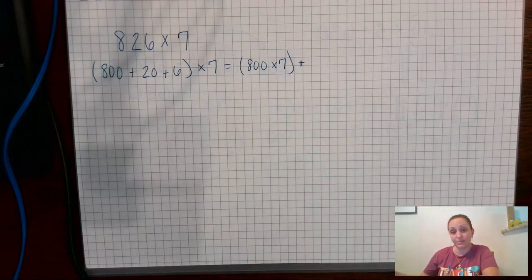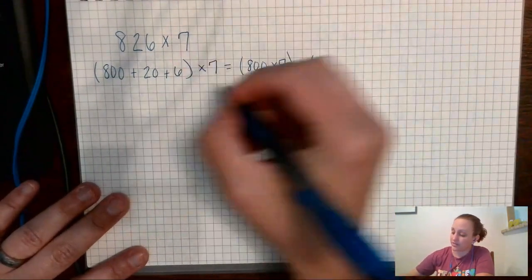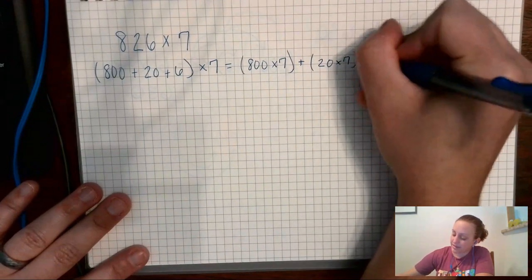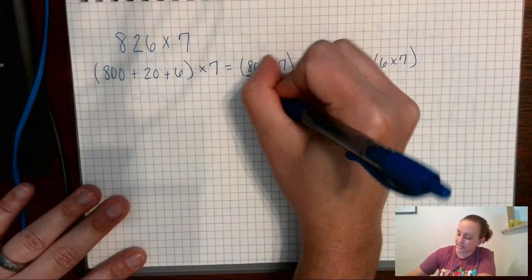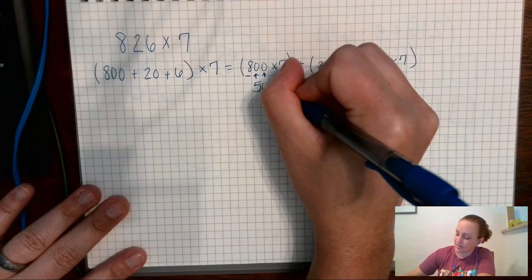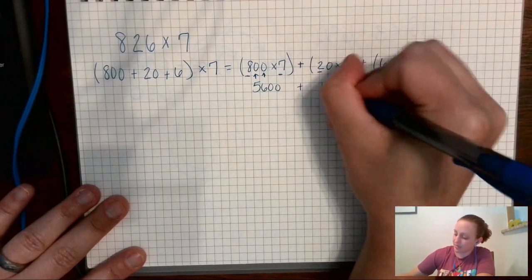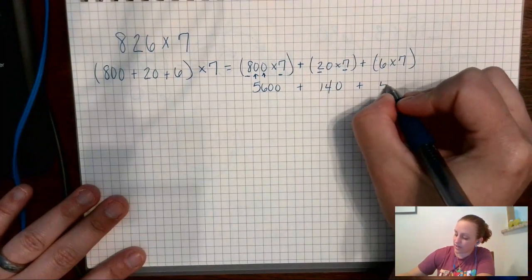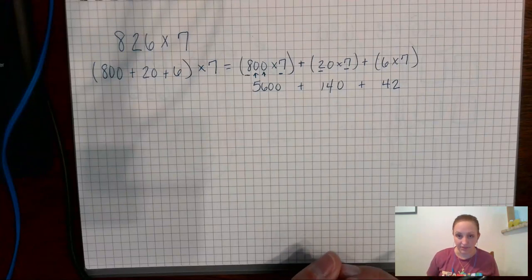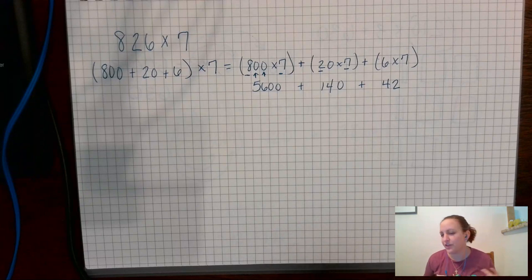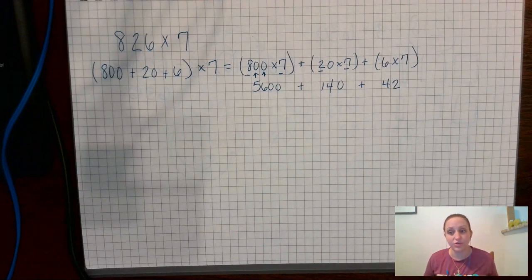So 800 times 7, plus 20 times 7, plus 6 times 7. Eight times 7 is 56, plus two zeros = 5,600. Two times 7 is 14, plus a zero = 140. And 6 times 7 is 42. I'm able to do this pretty fast because I know my multiplication facts really well. If I had to stop and count on fingers or draw pictures, those aren't bad strategies, but they're slow.